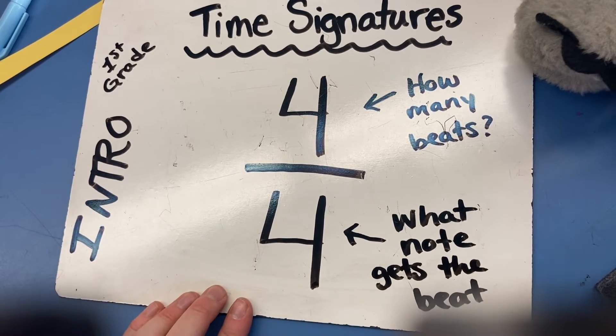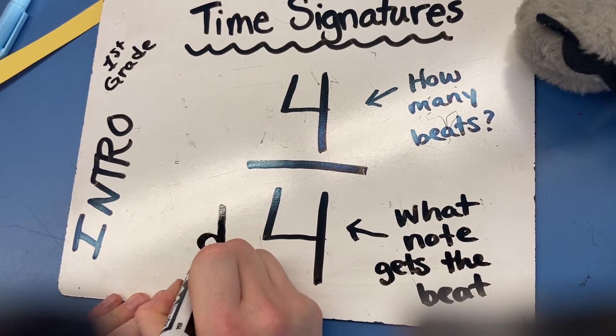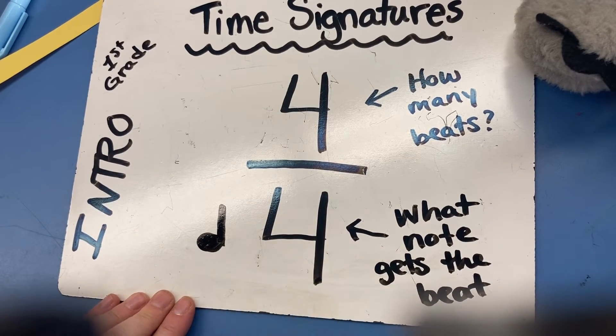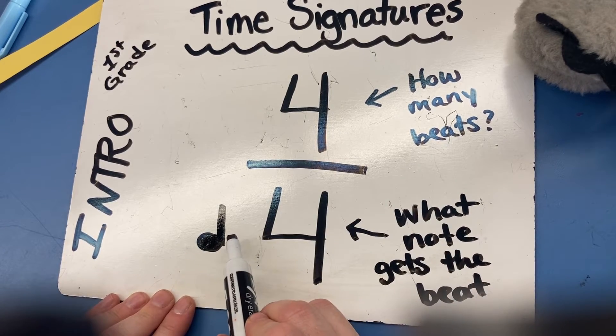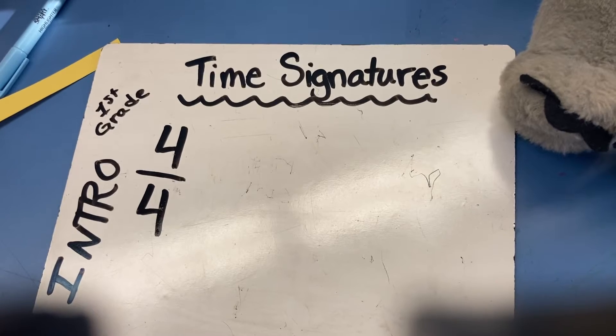When we are learning about this at the beginning, we're just going to put a ta on the bottom. This represents the 4 on the bottom. So how many beats? There are going to be 4 beats. Let's see a time signature in action.